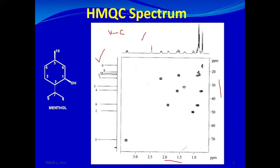Here is the structure of menthol. All the carbon atoms have been labeled — carbon one through ten — and the peaks are also labeled for convenience. Let's see the correlation of carbon number one. To see the correlation, we have to connect this contour to both the carbon-13 and the proton NMR scales.